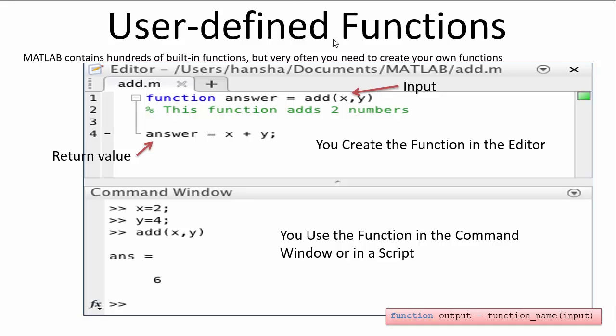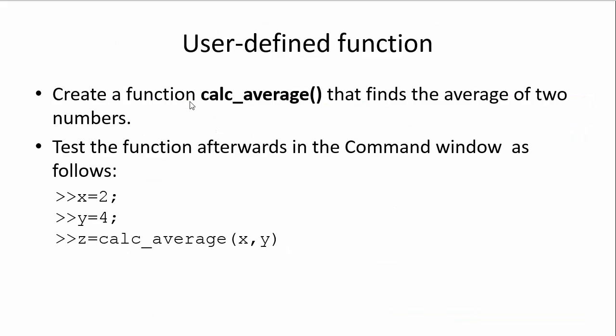We have already used many different built-in functions in MATLAB — the mean function, the rand function, the standard deviation function, etc. These are built-in functions that are part of MATLAB or some of the MATLAB toolboxes. But we can also create and use our own functions. As you know, MATLAB has a built-in function for calculating the average or mean value. But now we will create our own mean function, which we will call calc_average. This function will find the average of two numbers, and then we can test or use the function in the command window.